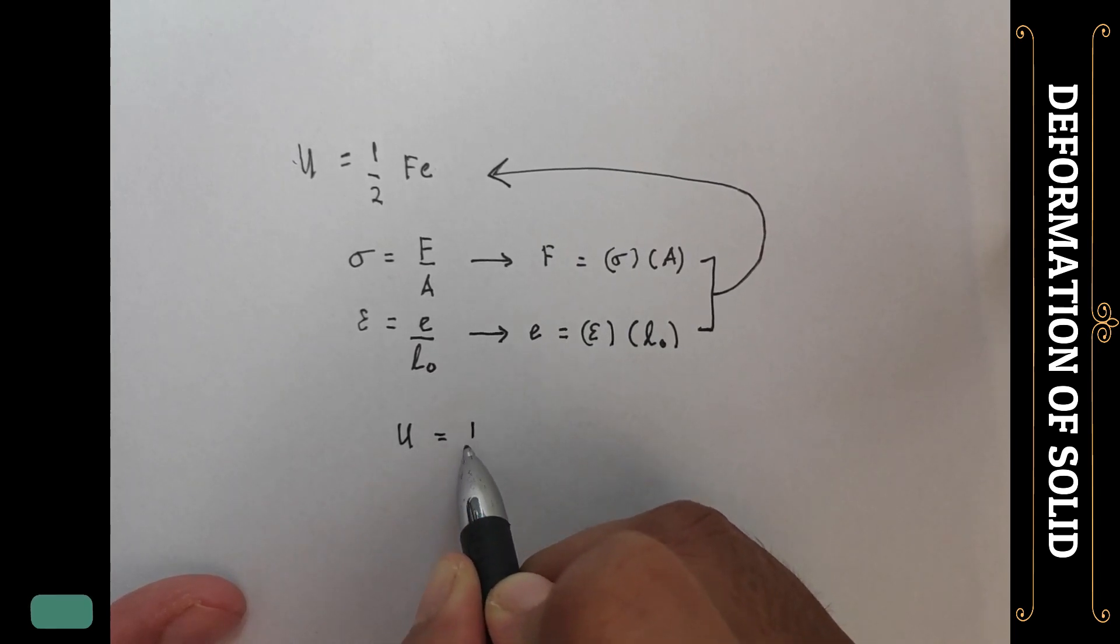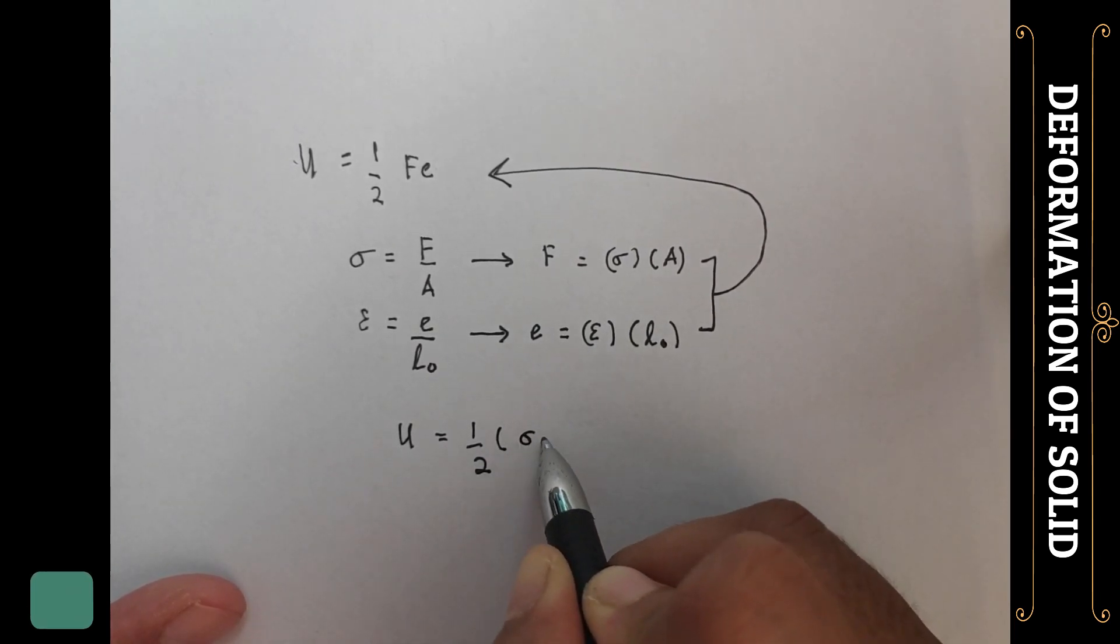We know that area times length is volume V, so we can write U equals 1 over 2 F E.